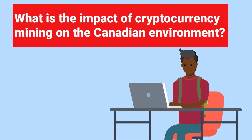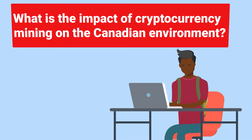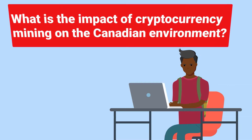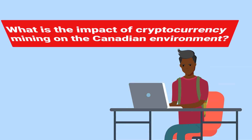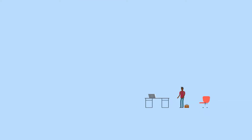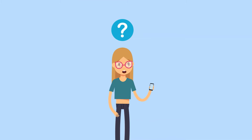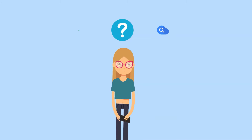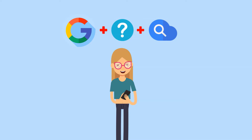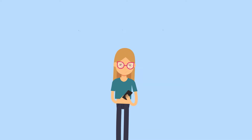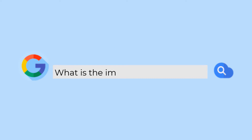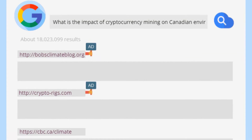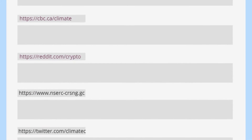Suppose you're interested in the following question about cryptocurrencies. We've been taught to search for this type of information by simply asking questions on the web. Typing this into a web browser or a library database is not the best way to find appropriate peer-reviewed information for your assignment.